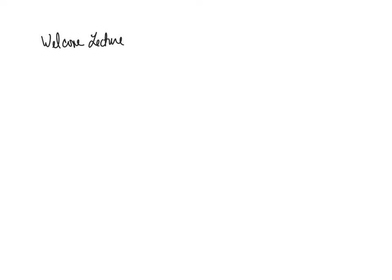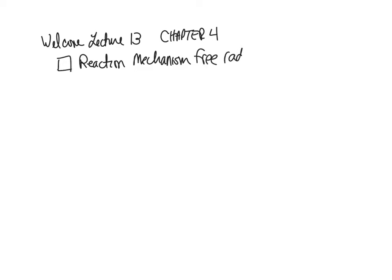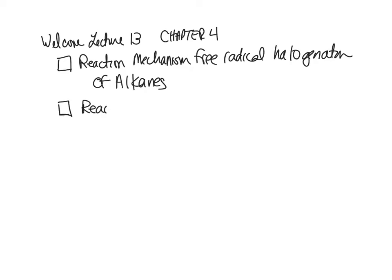Welcome to lecture 13. We are focused on chapter 4 in our textbook. Our learning objectives will be to look at a new reaction and a reaction mechanism called free radical halogenation of alkanes, and we will look at reaction energy diagrams that are used to describe a reaction mechanism. You'll need to be able to label these reaction energy diagrams.